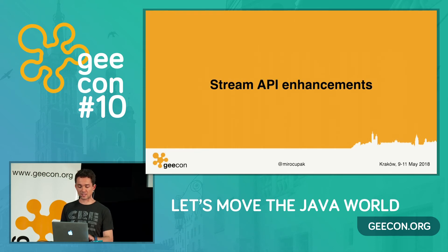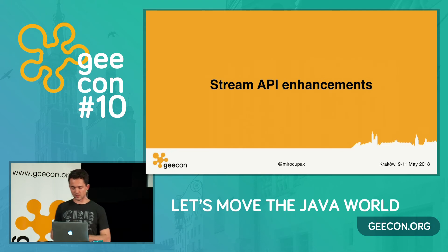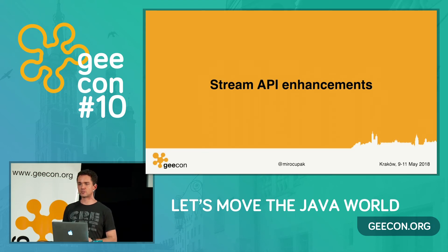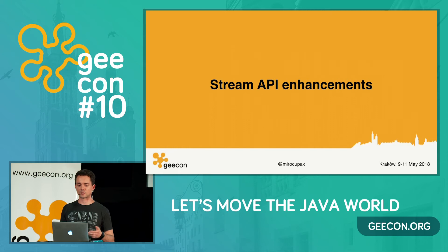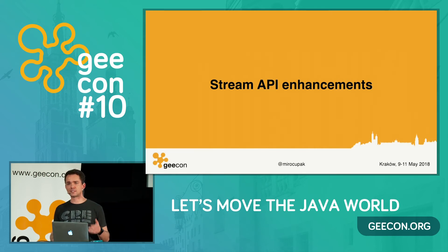Next: Stream API enhancements. Streams are not suitable for everything — you can make them work for almost everything, but that doesn't mean you should. There are still many scenarios where a for loop gives you much cleaner code. Java 9 makes streams suitable for more use cases by introducing a couple of interesting methods.